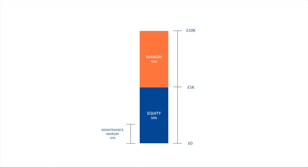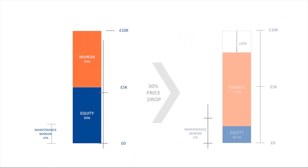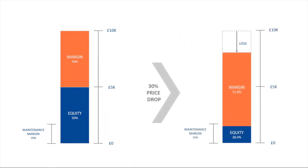Before we start, for those that are not familiar with margin calls, let's have a look at a bit of the context first. When setting up a brokerage account, investors are asked if they'd like to open up a cash or a margin account. A margin account amplifies an investor's buying power by allowing them to borrow money to buy stocks. A margin call occurs if your account falls below the maintenance margin amount. This is the minimum equity that must be maintained, which is typically set between 25 and 40%.